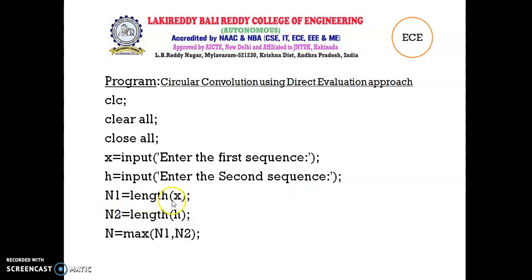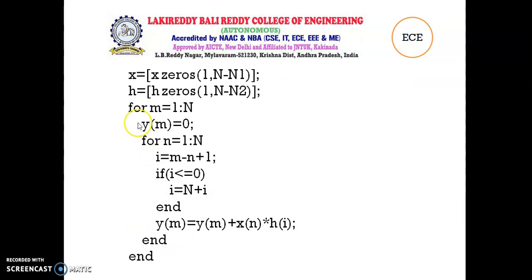N1 equals to length of X. N2 equals to length of H. N equals to maximum of N1, N2. As we know, to perform the circular convolution, it requires that both sequences are of similar length. If unequal length sequences exist, therefore we need to go for zero padding.